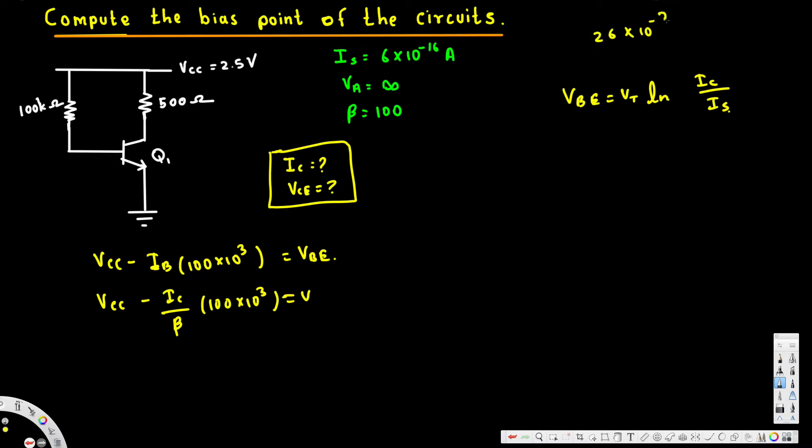And Is is provided right here, so we just have one unknown variable because beta, Vcc and everything is there. So we can calculate Ic from this.